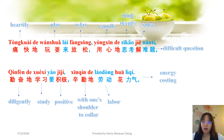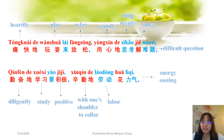More examples of 土也得: 痛快地玩耍来放松, 用心地思考解难题. 痛快地 means 'heartily', 玩耍 means 'to play', 放松 means 'to relax'. 用心地 means 'attentively/wholeheartedly', 思考 means 'to think', 解难题 — 解 means 'to solve', 难题 means 'difficult questions'.